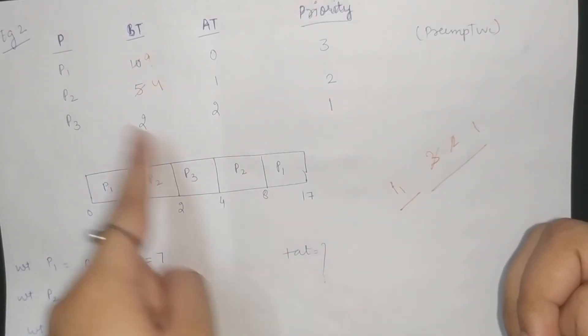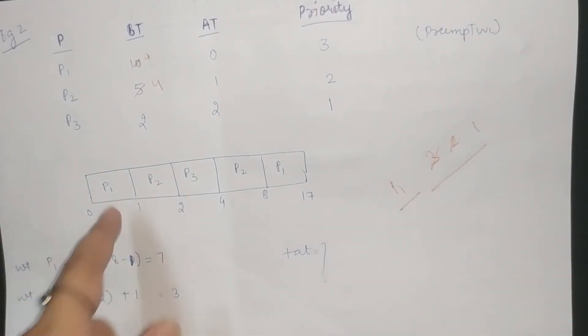After that, P2 will execute. After that, P1. Similarly, we will make this Gantt chart.